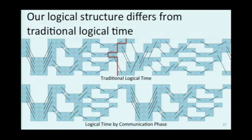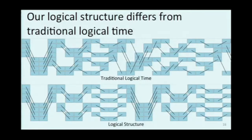We have this phase-level happened-before relationship. Within the phases, we don't want to just use the very traditional logical time that puts everything as early as possible. Since this is MPI, the sends are going to carry a little bit more weight in terms of how the developer chose to organize things. Once we do that, we make a few changes, and all of a sudden we have something that's very well structured and very well understood.